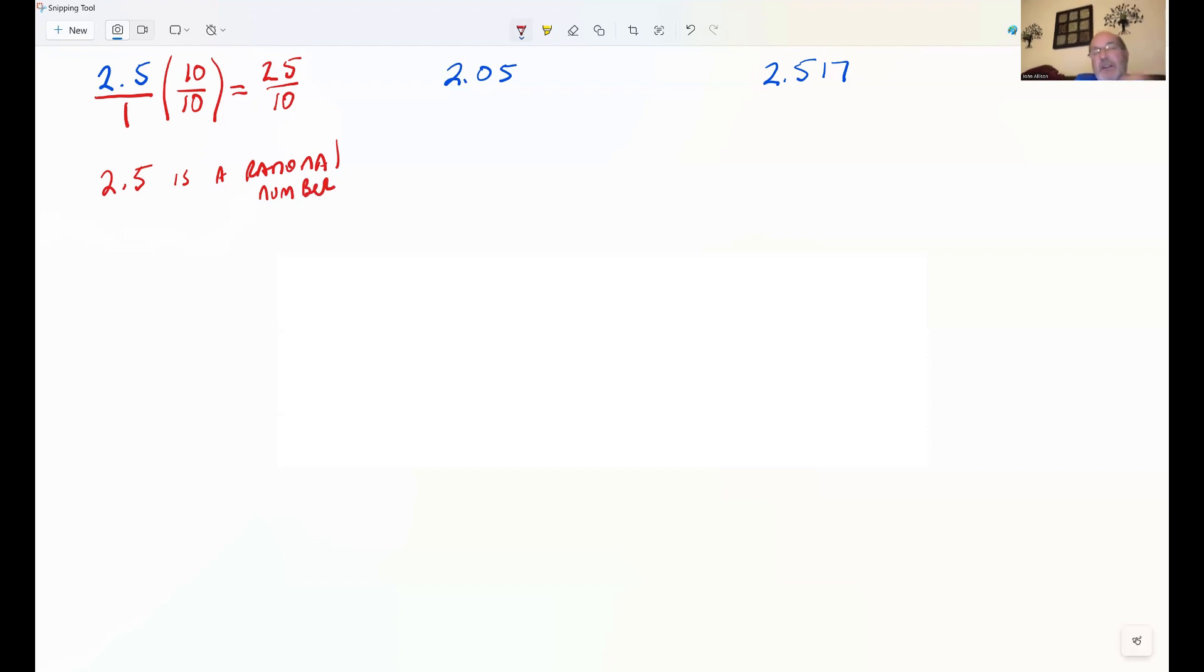Remember, a rational number is any number that can be written as a fraction with a numerator and denominator of both integers. We're going to reduce 25 tenths, just because you need to know how to do that as well.